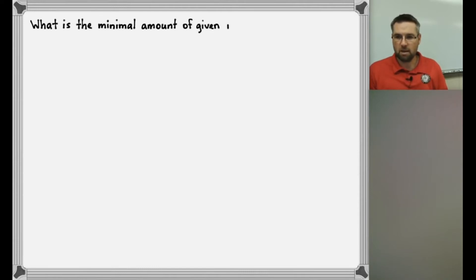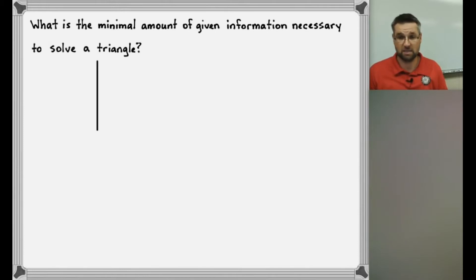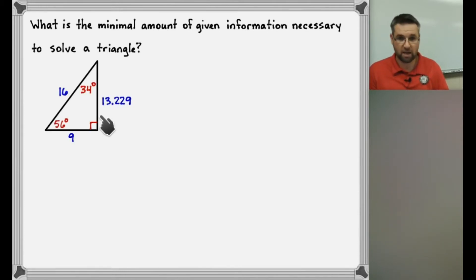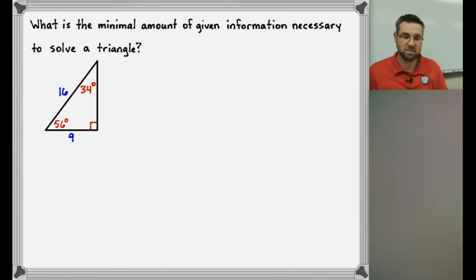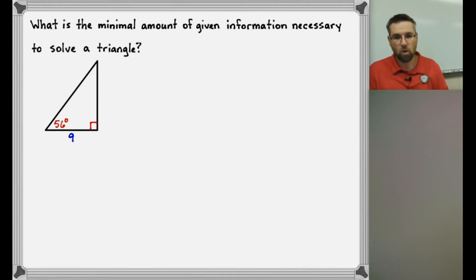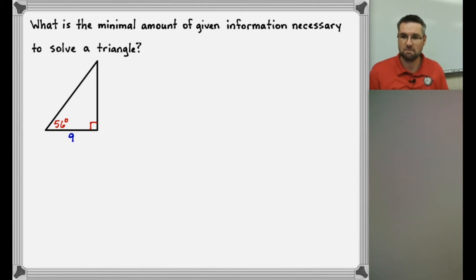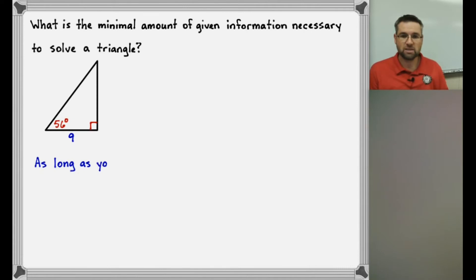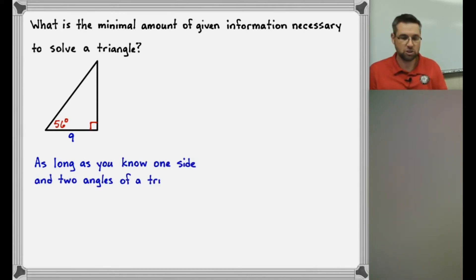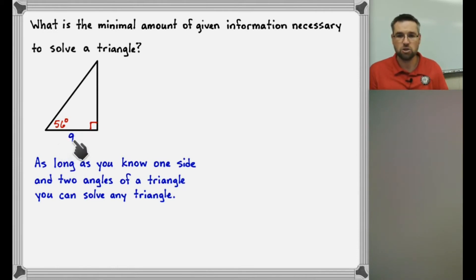What is the minimum amount of information that we would need to determine missing side lengths and missing angles? Here's everything we have — I just converted my radical form to decimal form here. I've got all three angles and all three sides. What could I erase and still figure it out? If I erase a side, I can find it with the Pythagorean theorem. If I erase an angle, I can find it with the triangle sum theorem. But what if I erase that other side? The answer is yes — I can still find the missing sides and the missing angle, because I can use trigonometry, specifically because this is a right triangle. As long as you know one side and two angle measurements, you can solve any triangle.